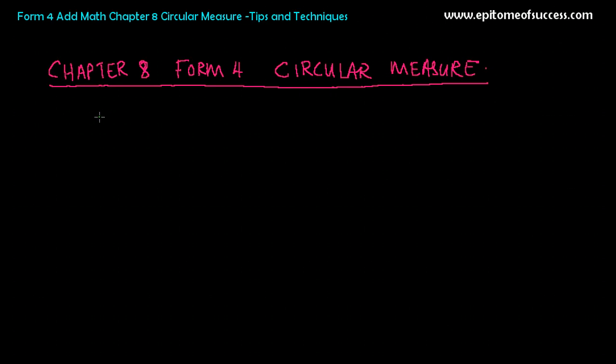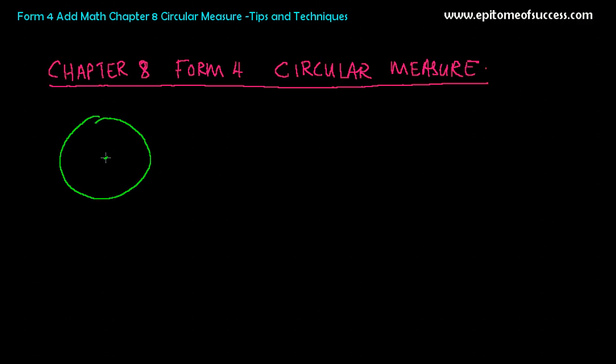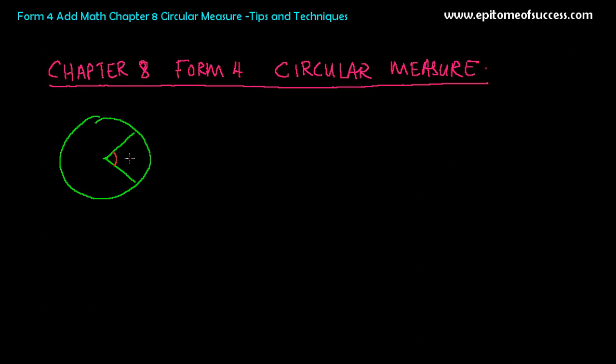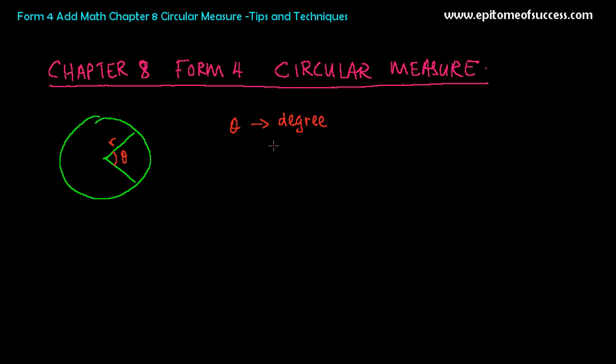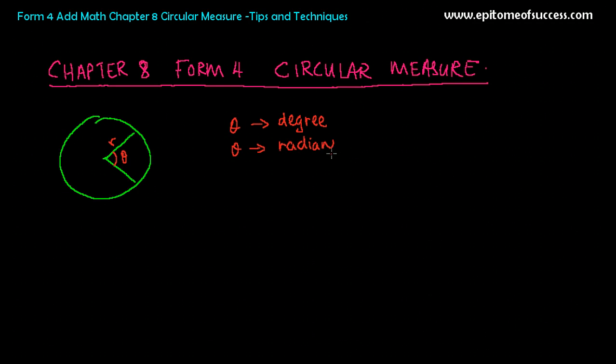The first thing is this. Circular measure has to do with circles, obviously. So this is a sector. And some terms that you need to understand: this angle is normally referred to as theta and the radius is r. And the first thing that you need to know in this chapter is this theta, which is the angle, will be measured, can be measured in degree, which is what you have learned so far. The angle is 20 degree, 35, 45 degree. However, the theta can also be measured, in this case, in this chapter, it's called radian. It's just another way of measuring angles.